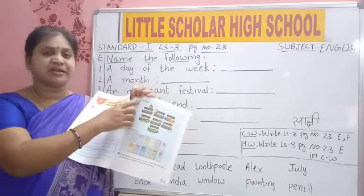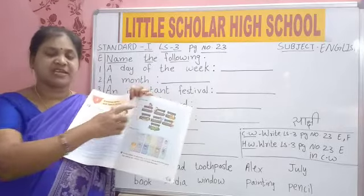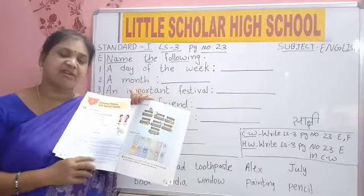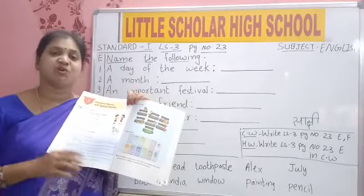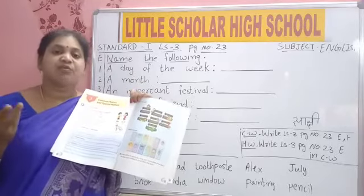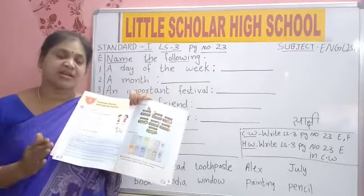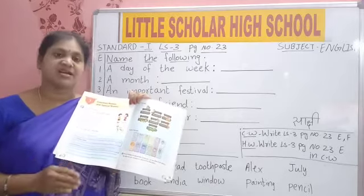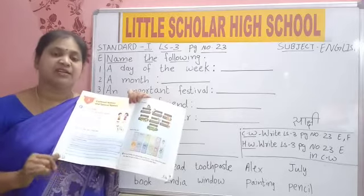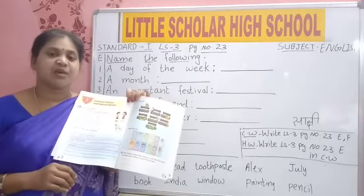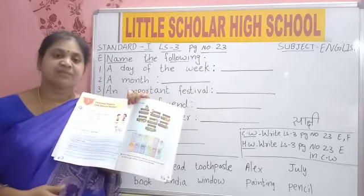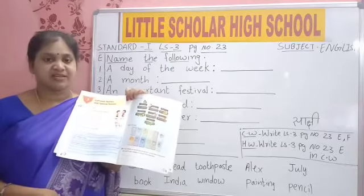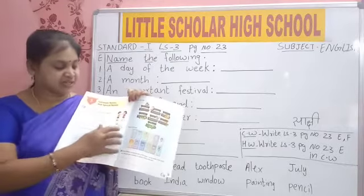I asked you to learn the days of the week. How many days are there in a week? 7 days. You should start from Monday because Monday is the first day: Monday, Tuesday, Wednesday, Thursday, Friday, Saturday and Sunday.